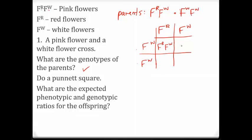We're going to fill out the boxes just like you always would. Bring your letters down and bring your letters over. When we have an R and a W in the same box, we want to make sure that we're putting them in alphabetical order. So that's our Punnett Square.